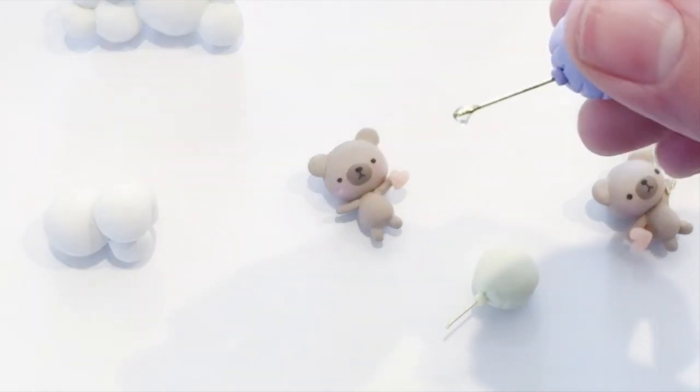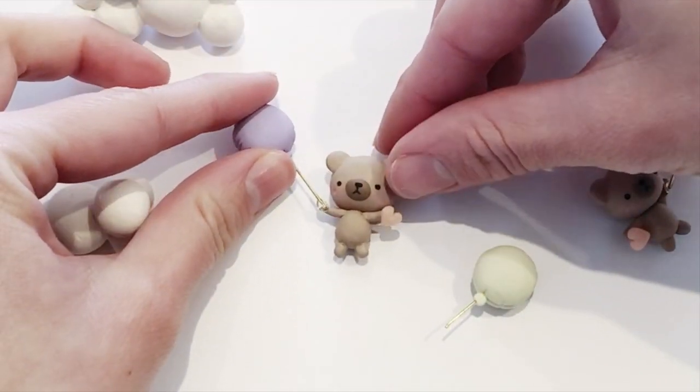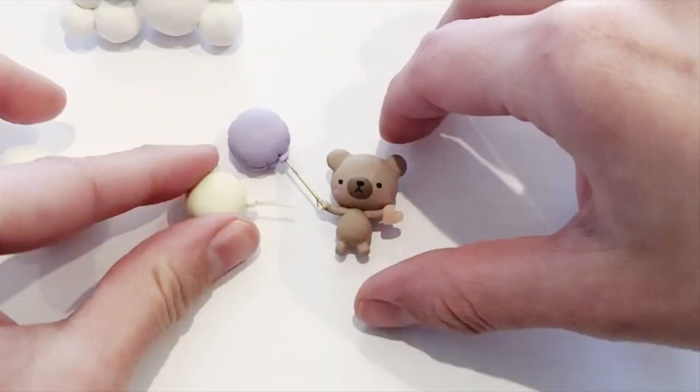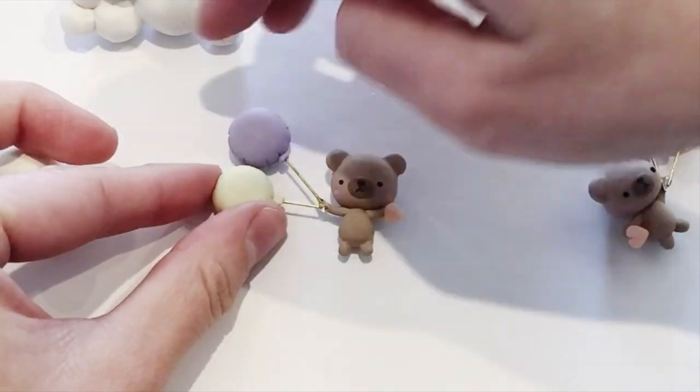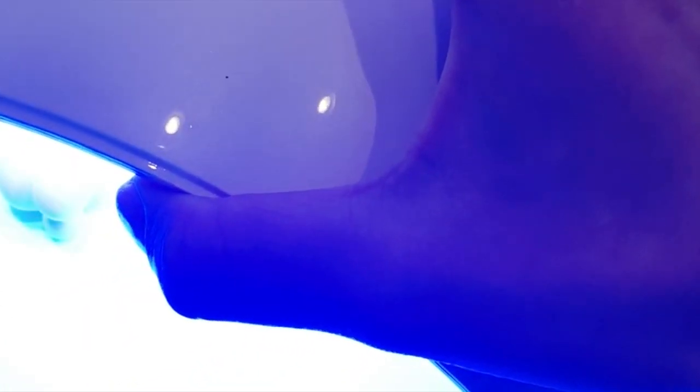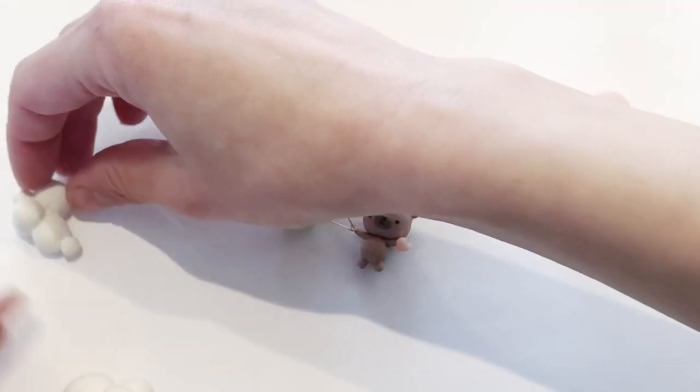Now there's no right or wrong way to put all your pieces together. I used clear UV resin here. So I just dipped it in clear UV resin, positioned the pieces where I wanted it to be, and used a UV resin light to harden that resin and keep it in place.